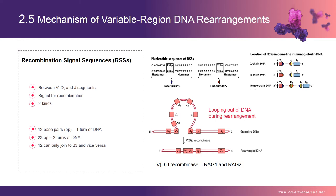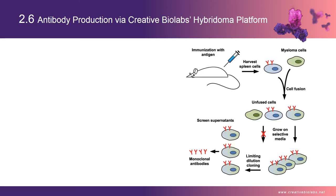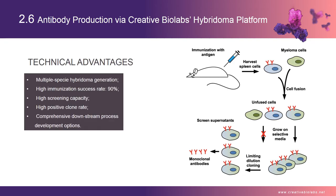There is a similar gene rearrangement mechanism in T-cells (T-lymphocytes). Hybridoma technology is a method for producing large numbers of monoclonal antibodies. The detailed process is not described here, but if you are interested, welcome to watch the video named 'Development of Monoclonal Antibody' created by Creative Biolabs. The production procedure can be seen in the diagram shown.